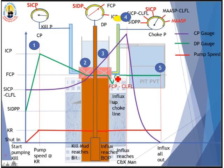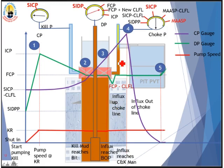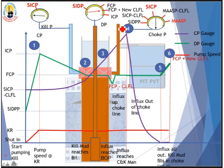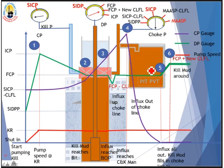As gas is traveling up in the choke line and comes up to the surface, we expect casing pressure to max out, then when gas starts getting out of the choke and kill manifold, we expect casing pressure to drop drastically. During this process, we still control the choke to keep drillpipe pressure constant at Final Circulating Pressure. When kill mud starts filling into the choke line, we get back the choke line friction loss — but this is the new choke line friction loss. So the new pressure on the drillpipe pressure gauge will be Final Circulating Pressure plus the new choke line friction loss. We keep pumping to get kill mud all the way around back to the pit.